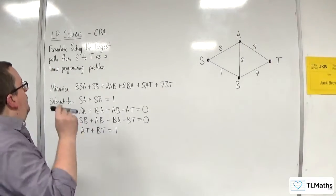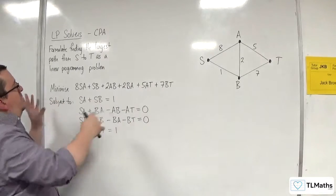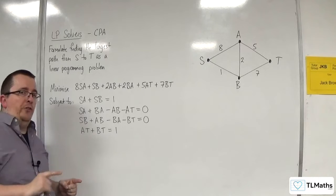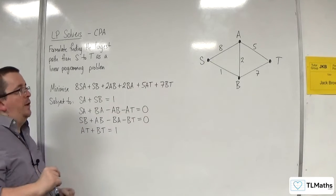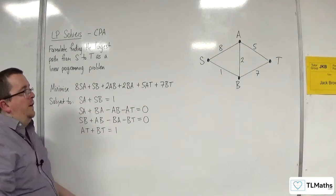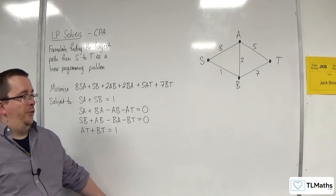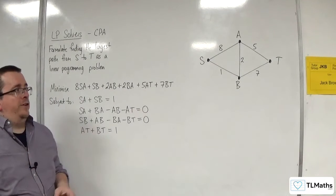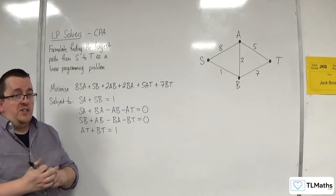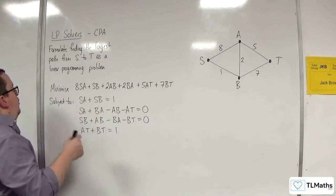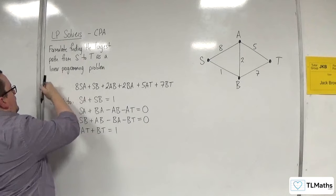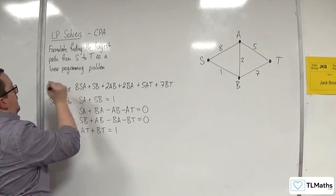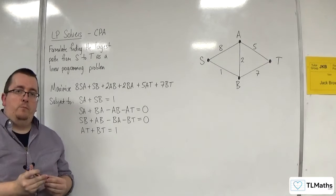What I've got here is my answer to when we did this same problem but to find the shortest path. We worked with the same network a few videos ago, and this was my LP solver that found the shortest path. Now, if I want to find the longest path, your gut instinct might be: I'll just change minimise to maximise. Done. Surely.